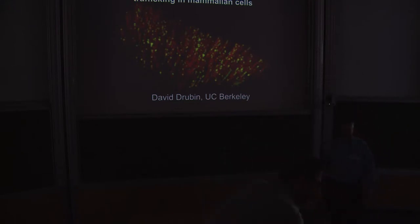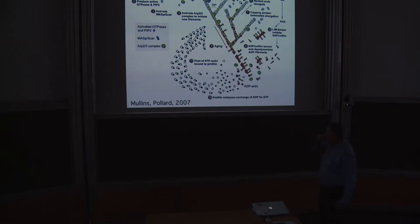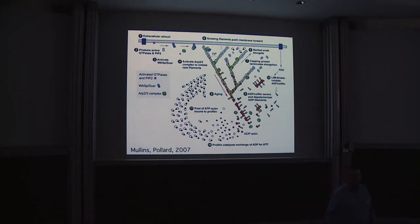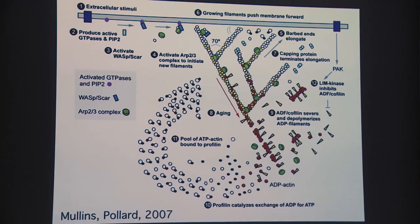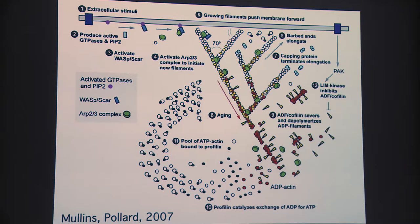Today I will tell you about our studies on the role of actin dynamics in endocytic trafficking. We haven't heard enough about the cytoskeleton here yet, so I thought I'd start off with a picture of the actin cytoskeleton, which is one of the main subjects of study in my lab. This is a scheme made by Dyke Mullins and Tom Pollard, which shows the force-generating machine responsible for the motility of cells and other types of mechanical force generation in cells that use the actin cytoskeleton.